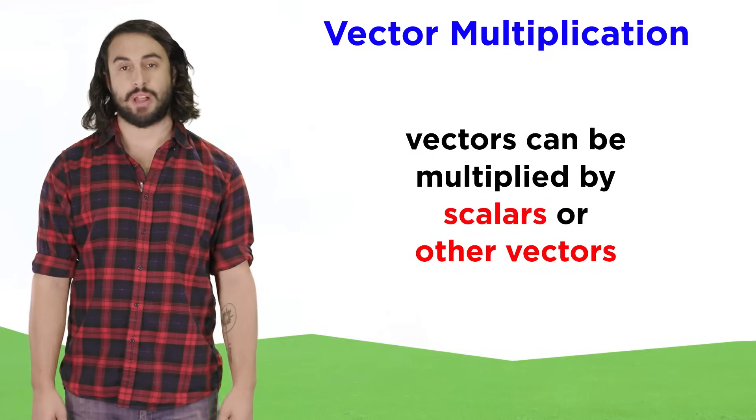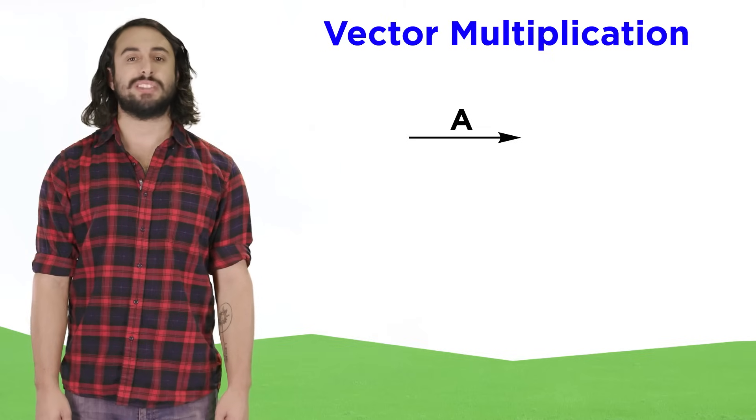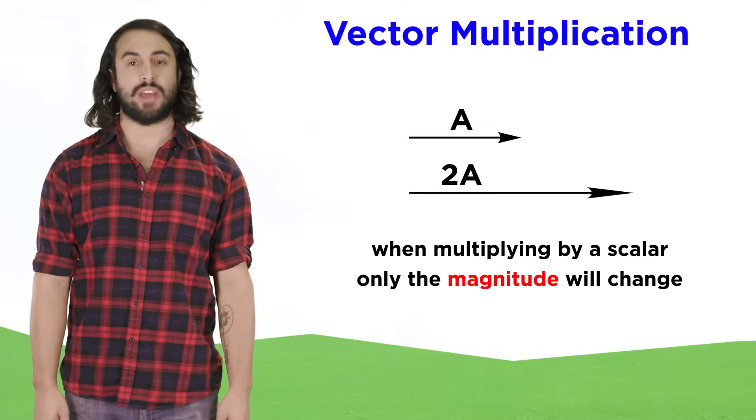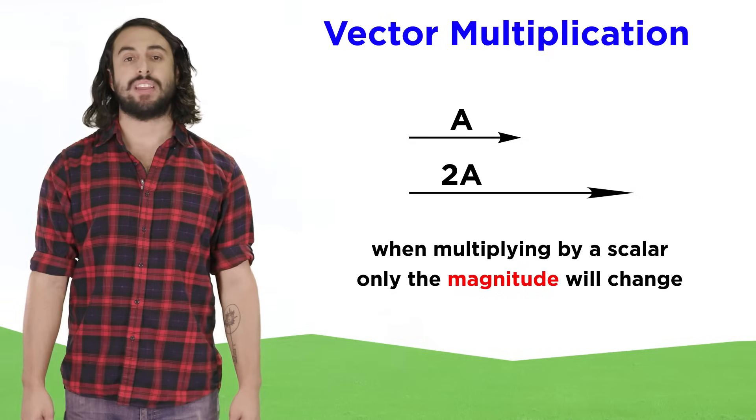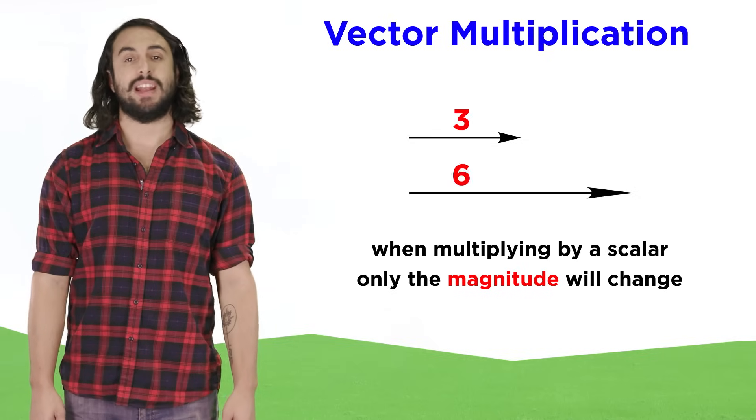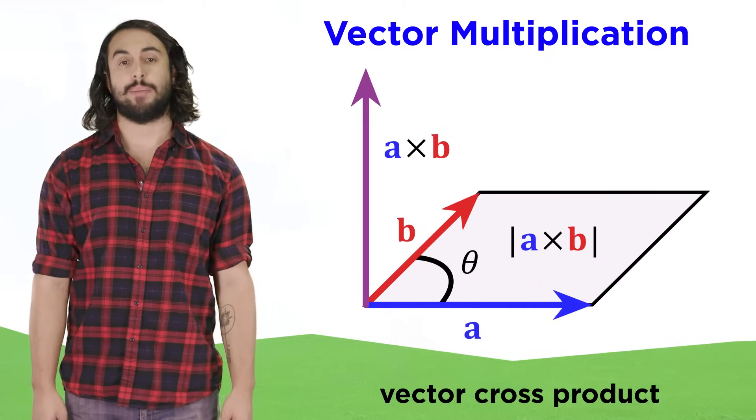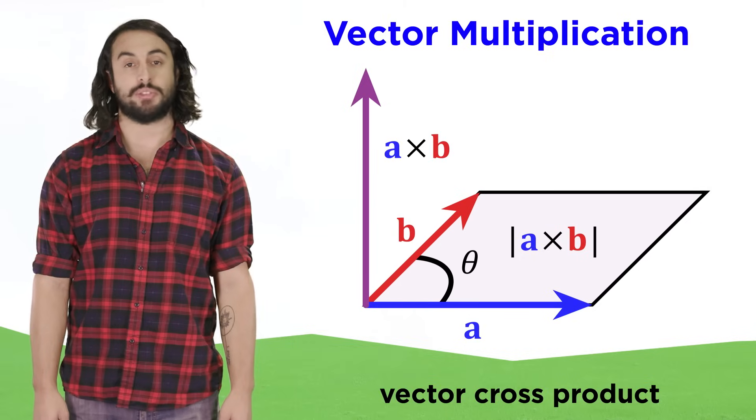Vectors can also be multiplied by scalars or other vectors. When multiplying a vector by a scalar, we will simply multiply the magnitude of that vector by the scalar, while keeping the direction the same. So if multiplying this vector by two, its length will double. Two vectors can also be multiplied, but that will be more complicated, so we will go over that another time.